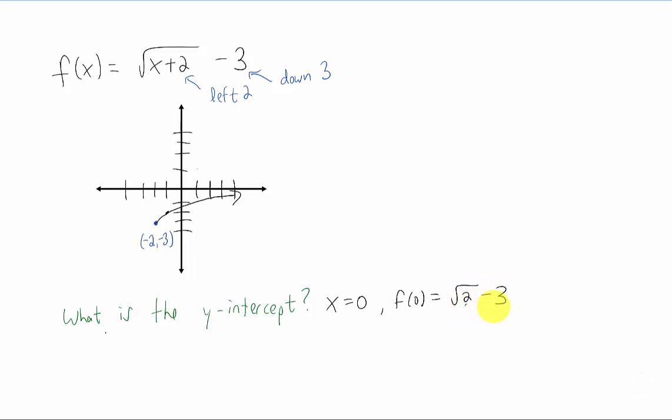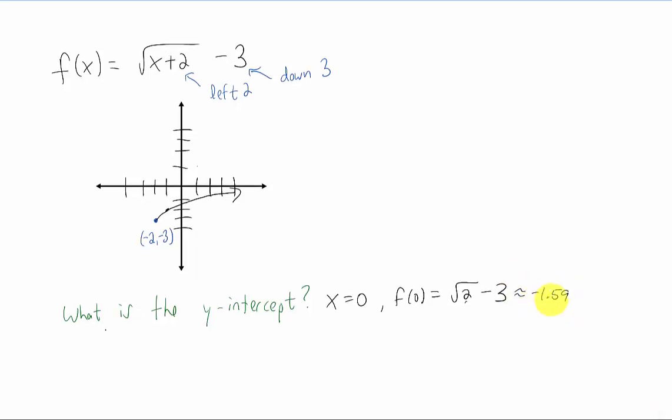Now, I don't know what that number is. It's an irrational number. But if we plug it into our calculator, we get something like negative 1.59. So about negative 1 and a half. It looks like we got pretty close on our graph to that value.